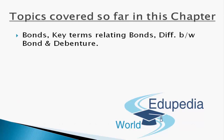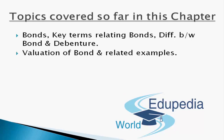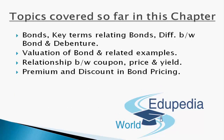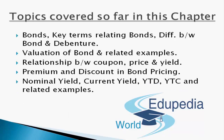We have already covered what are bonds, key terms relating to bonds, difference between bond and debenture. We have already covered valuation of bond and its related examples. Relationship between coupon, price and yield has already been discussed. Premium and discount in bond pricing and nominal yield, current yield, yield to call and yield to maturity and related examples — all these topics have already been covered in the past three video presentations relating to the bond valuation chapter.